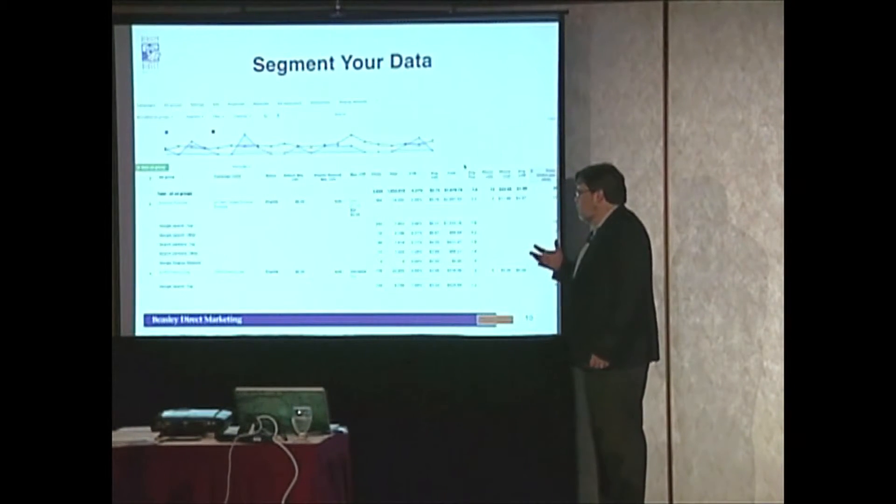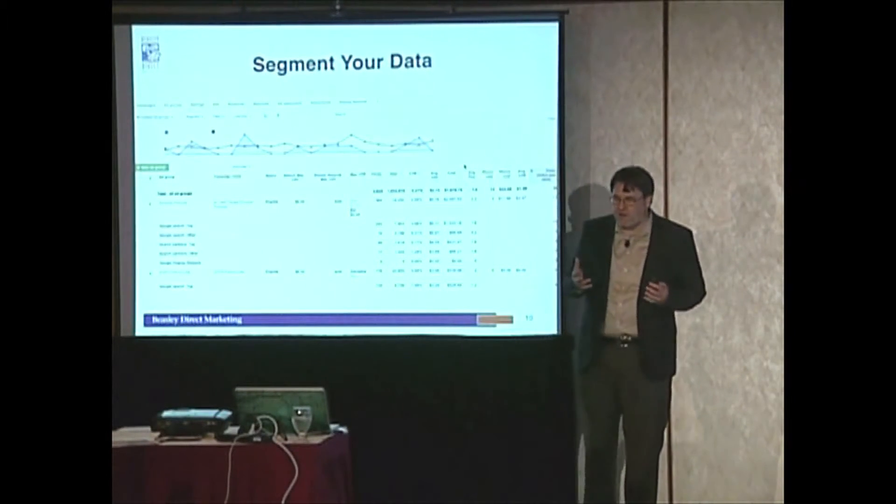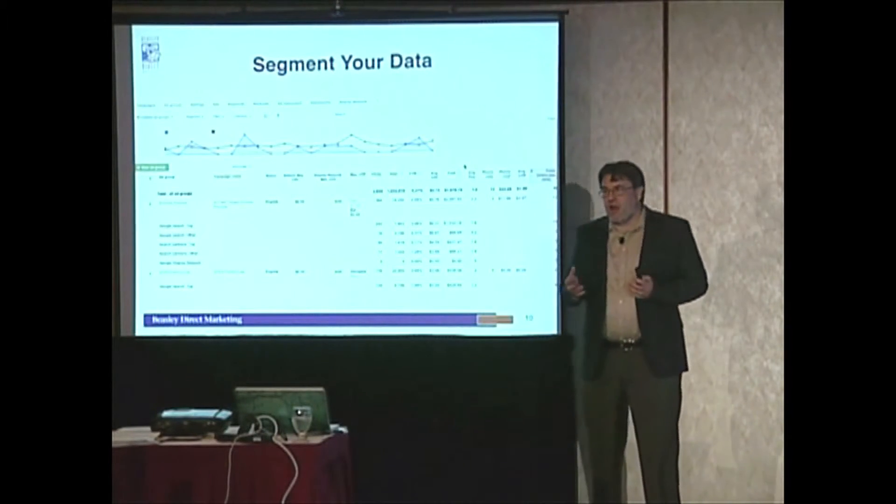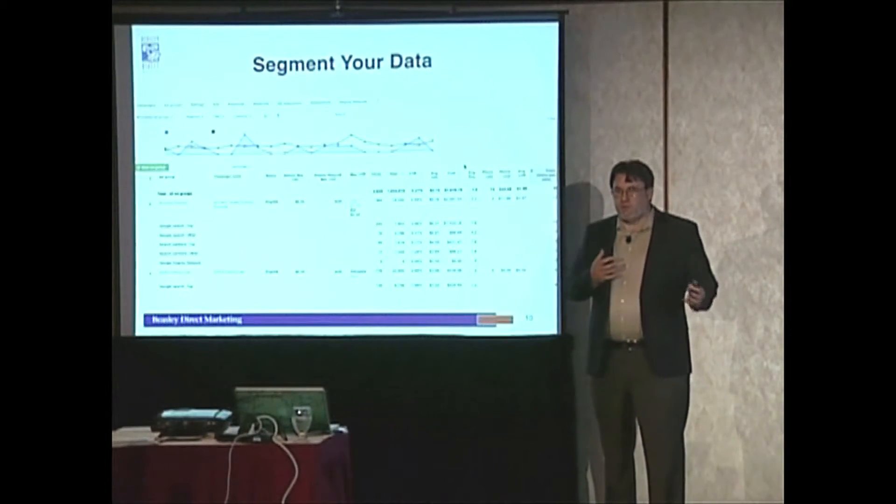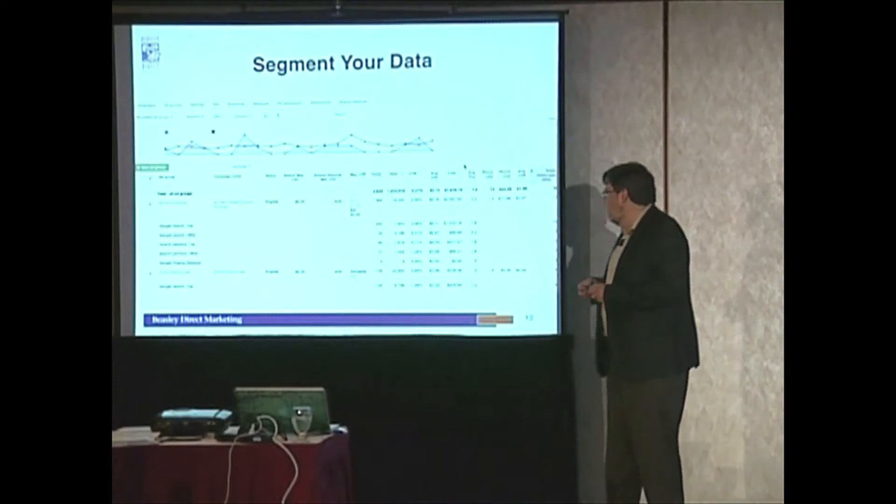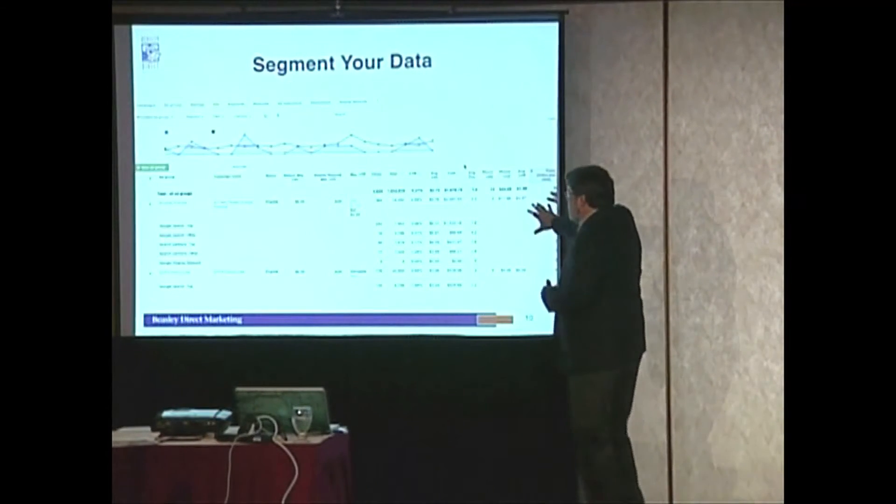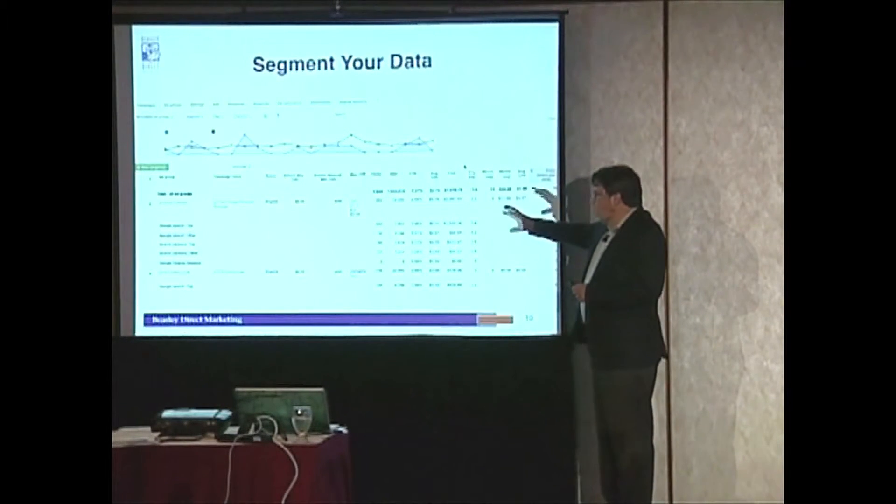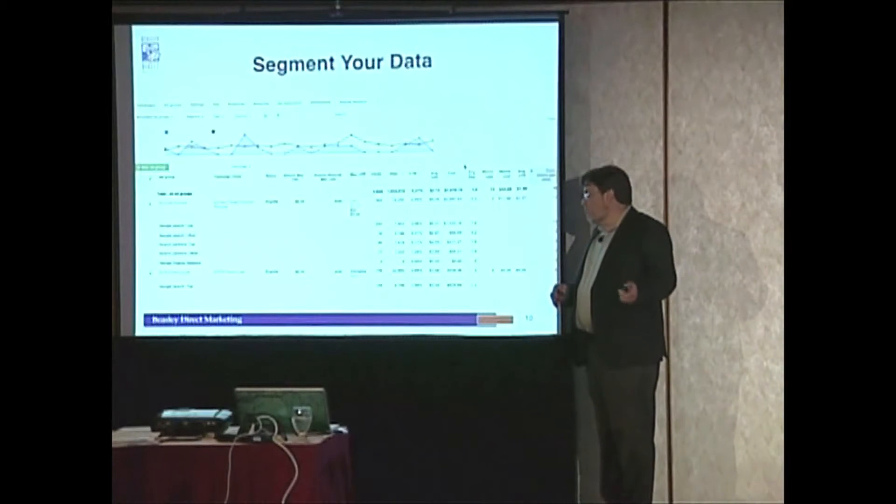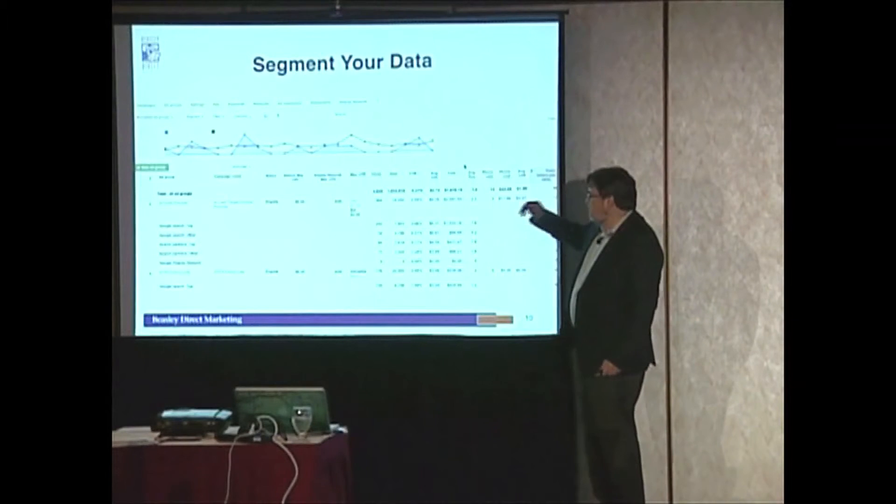One thing we look at when doing account analysis is segmenting our traffic into different buckets. The dimensions reports and filtering allow us to do this segmenting. This is for a family law practice. We wanted to see how campaigns were performing on Google, on Google's partner networks, and on the top two listings versus listings three through five. So we segmented it out.